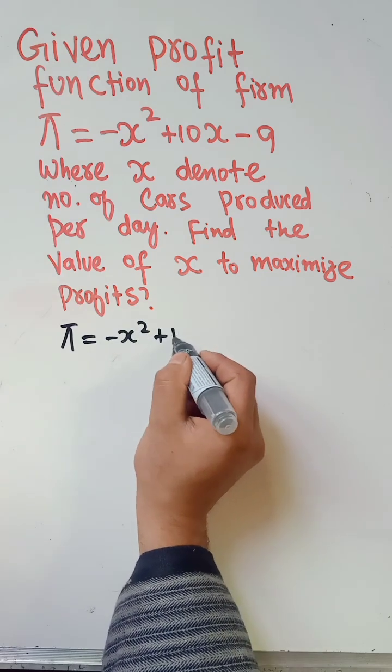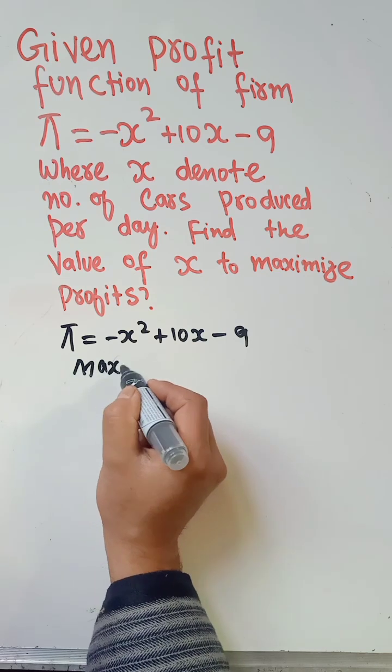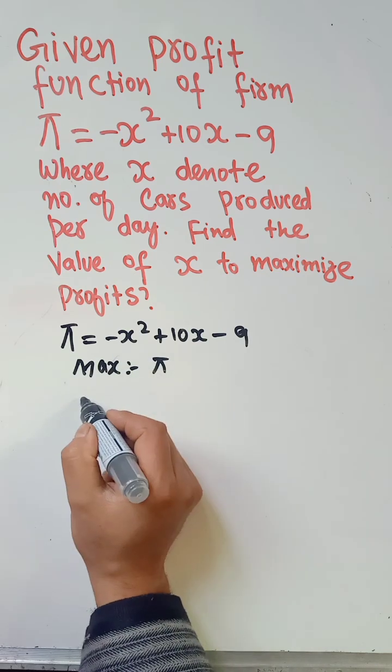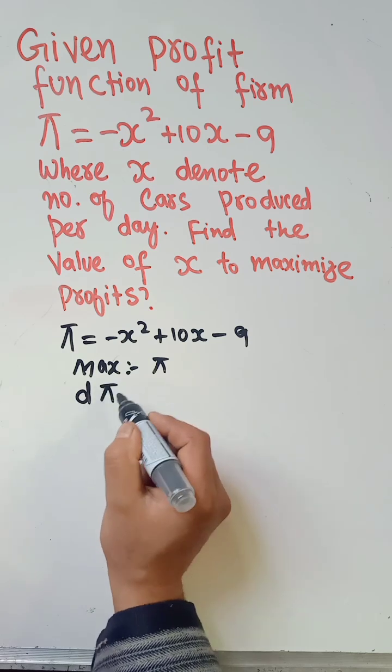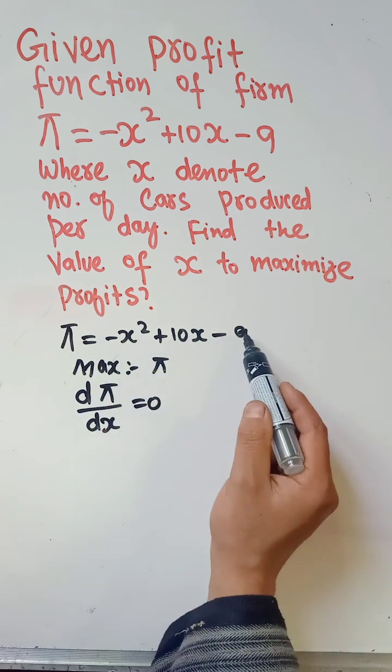For maximizing profit, the marginal profit should be equal to 0. That is, the derivative of the profit function with respect to x should be equal to 0. So differentiating this function with respect to x: